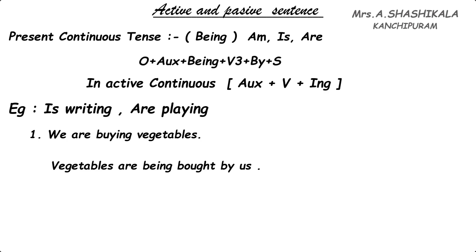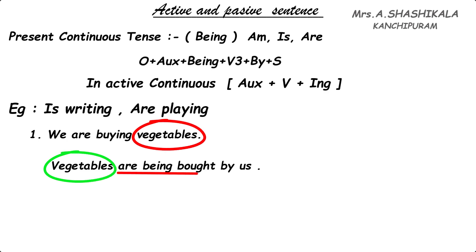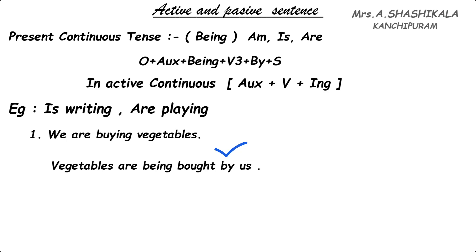We have to change that into OVS. First we are going to write 'vegetables' — it is plural, so we are going to use the auxiliary verb 'are', then 'being', then the V3 form: buy, bought, bought. And the connective word 'by', and 'we' changes to 'us'. So the answer is: 'Vegetables are being bought by us.'